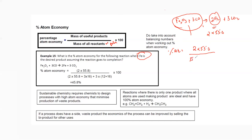To work out the total mass: iron is 55.8 × 2, oxygen is 16 × 3, carbon is 12 × 3, and oxygen again is 16 × 3 — all multiplied together and summed. The percentage atom economy for this reaction comes out as 45.8%.